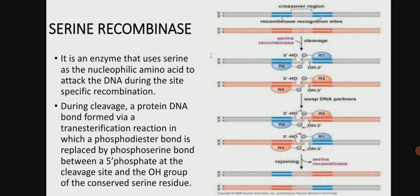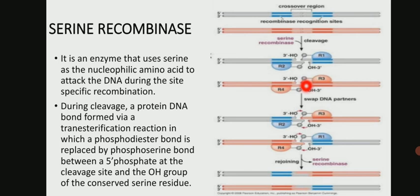Let's see how the serine recombinase family performs recombination. Four serine recombinase enzymes bind at each of the four DNA strands: R1, R2, R3, and R4. Then each of the four strands is cleaved within the crossover region by one subunit of the protein before strand exchange. They generate a double-stranded break and swap their partners — R2 recombines with R3 and R1 recombines with R4. After swapping, they bind with each other in an opposite orientation and we get our recombination product.